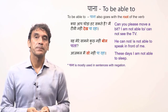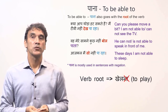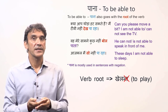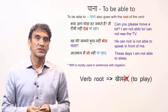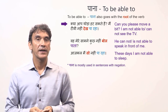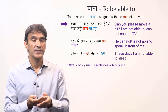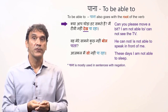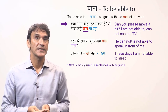The next model verb is paana, meaning to be able to. It also takes the root of the other verb, just like sakna. In fact, the meanings of paana and sakna are very similar and they are often used interchangeably. For example: 'kia aap thoda hat sakte hain? Main tv nahi deekh pa raha' — can you please move a bit? I am not able to see the TV. Paana goes with the other verb in its root form — deekh, not the full verb. Deekh pa raha — able to see.